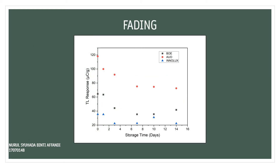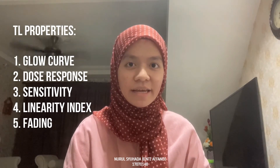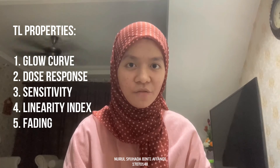Next is fading. We want to see how the TLD signal fades exponentially with time, since the response in the material decays with respect to time. You can see that it is decreasing exponentially as expected. Clearly, BOE has shown to possess excellent thermoluminescence properties that can be used as an alternative for an environmental radiation dosimeter.